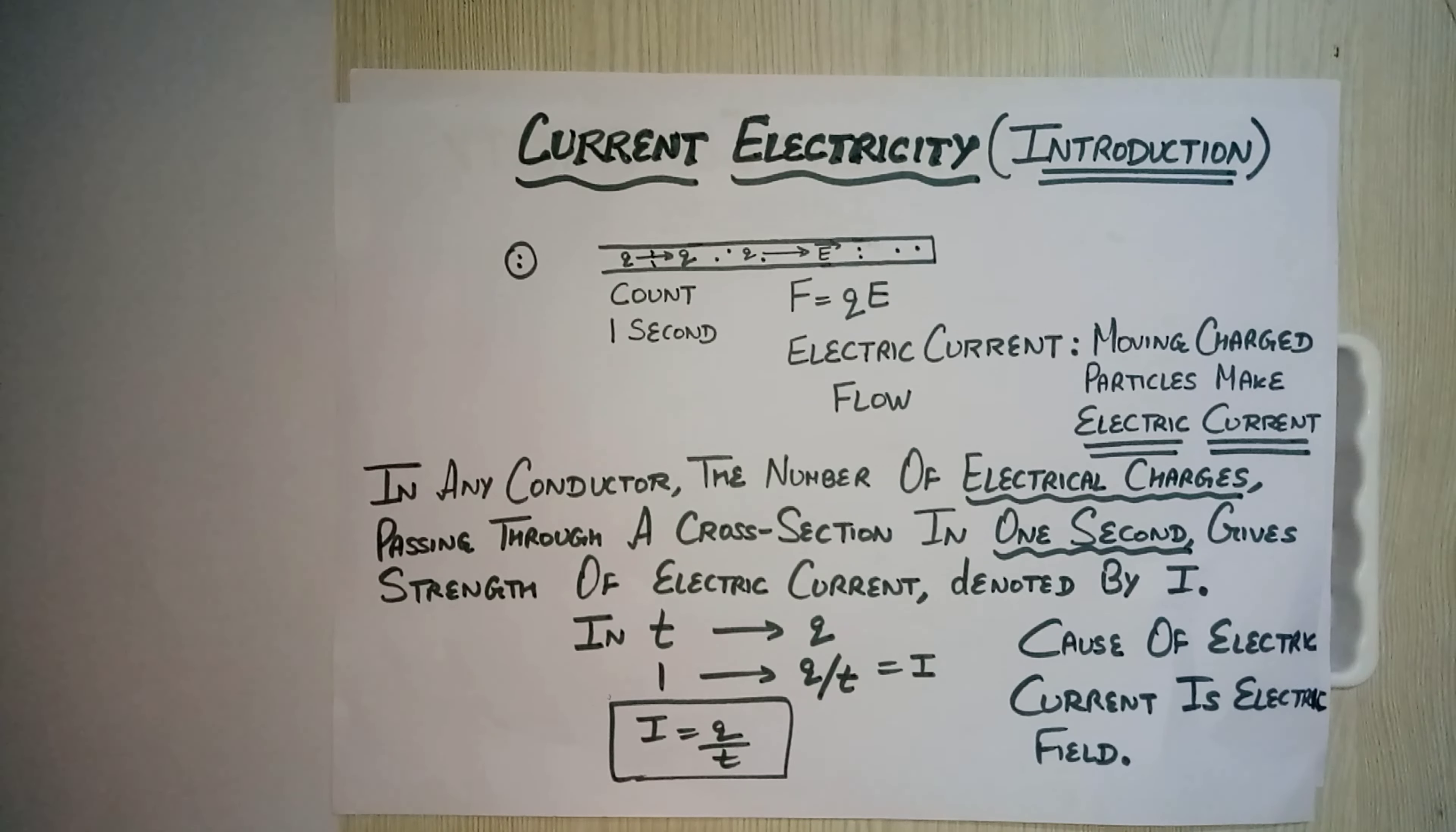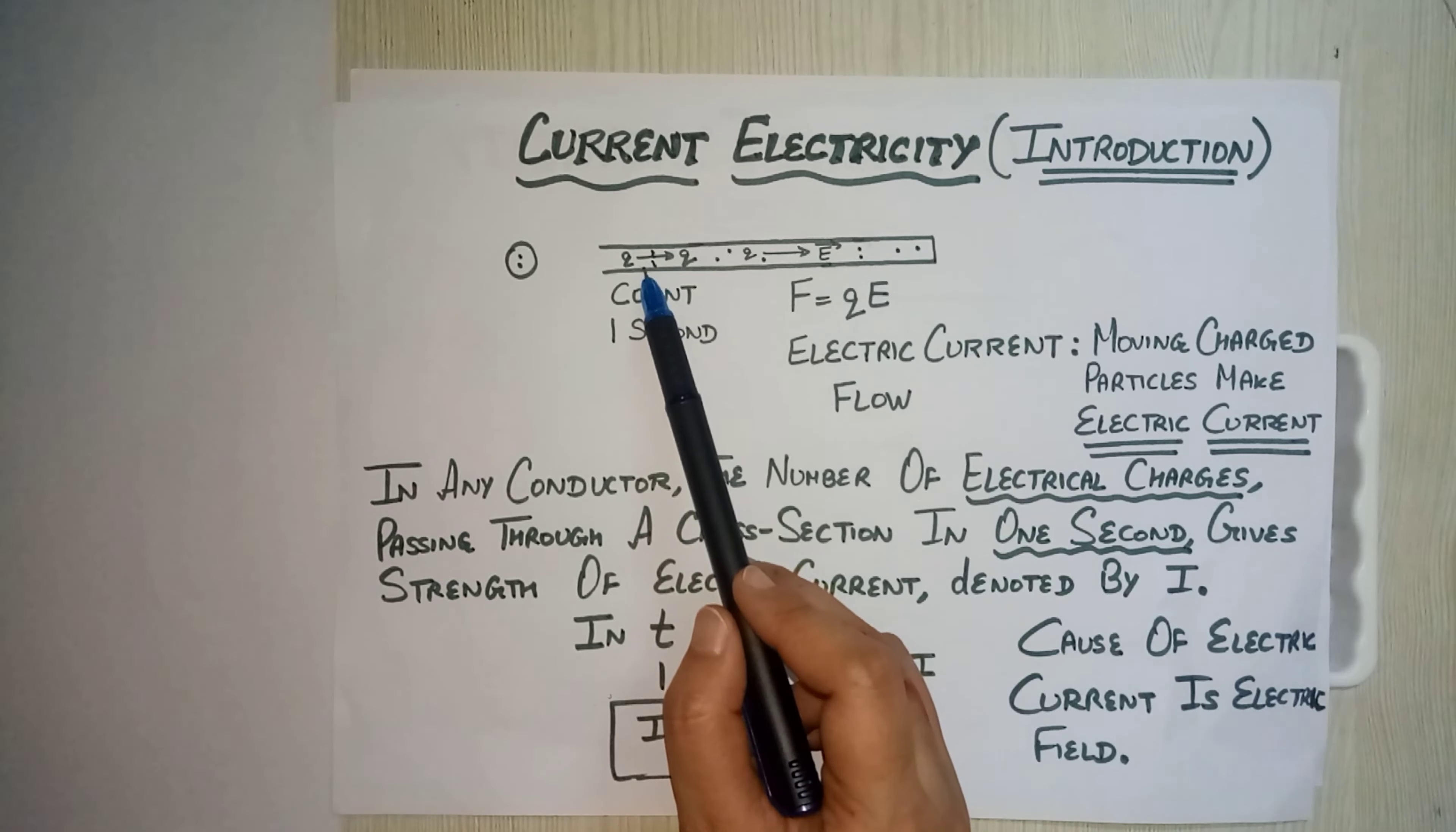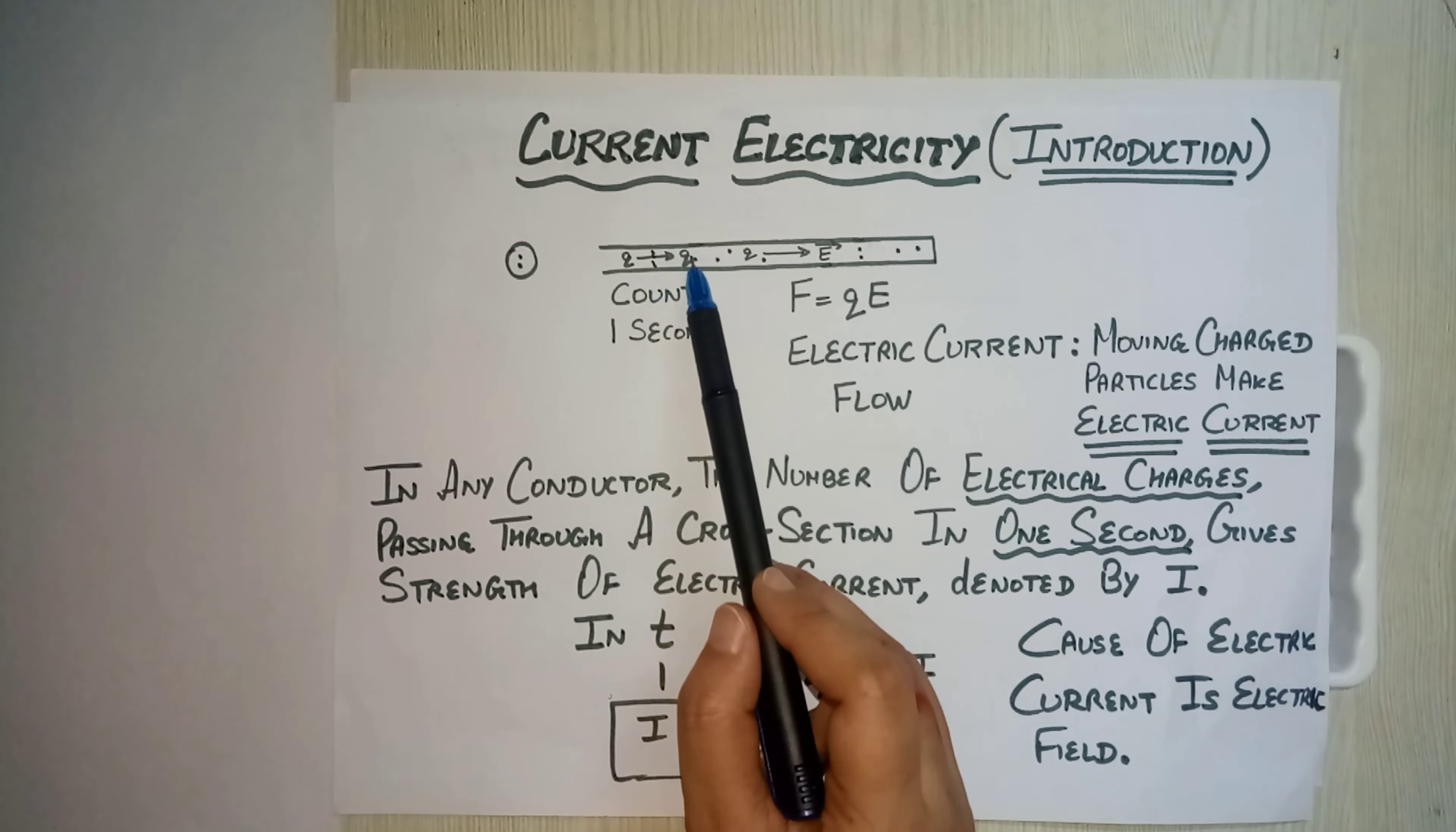So moving charge particles make electric current. Now this electric current has got strength. To count the strength, we put our imaginary gate here and we start counting: count how many charges jump over this gate in one second.